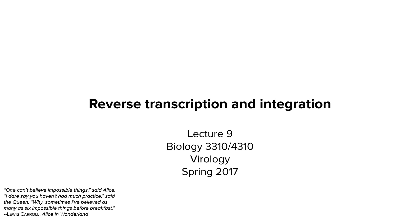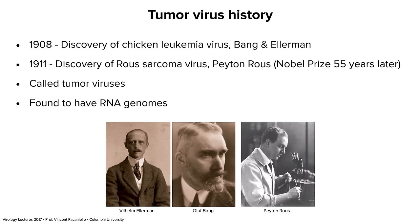This starts back in 1908 with two investigators, Bang and Ellermann. Nobody smiled back then because they didn't know about viruses yet. Bang and Ellermann discovered chicken leukemia virus, a virus that causes leukemia in chickens. Back then, leukemia wasn't considered to be a tumor because it wasn't solid. Eventually we figured out it is a tumor — all tumors don't have to be solid. They could be proliferation of single cells like leukemia.